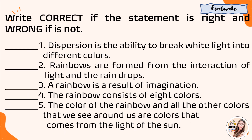Let's check your answers. For number one, dispersion is the ability to break white light into different colors — the answer is correct. Second, rainbows are formed from the interaction of light and the raindrops — the answer is correct. Number three, a rainbow is a result of imagination — the answer is wrong. Number four, the rainbow consists of eight colors — it is wrong because it consists of seven colors. Number five, the color of the rainbow and all the other colors that we see around us are colors that come from the light of the sun — it is correct.